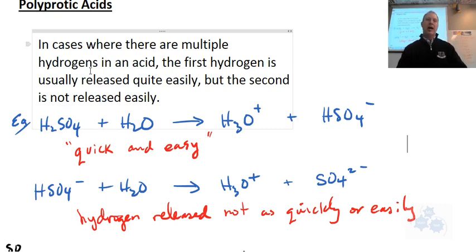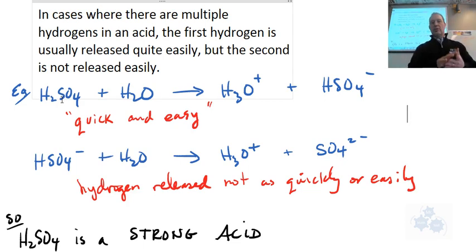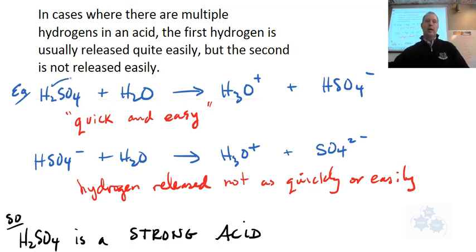So in cases where there are multiple hydrogens in an acid, the first hydrogen is usually released quite easily, but the second is not released very easily. So here we have a case where H2SO4 we know is a strong acid. And how do we know that? Well, if you look at your data tables, you'll see that the Ka is very high. So that means it dissociates very easily and produces a lot of H plus or hydronium ions in solution. So it's a strong acid. But does it completely dissociate? Here's the thing. With something like this, this first step where it emits one hydrogen, it donates a hydrogen to the water, that happens very quick and very easy. That's why this is a strong acid.